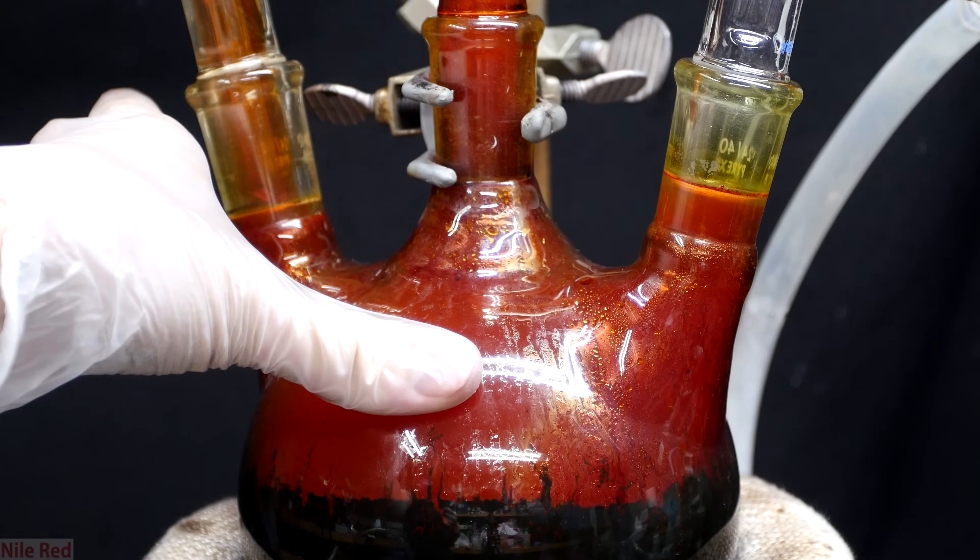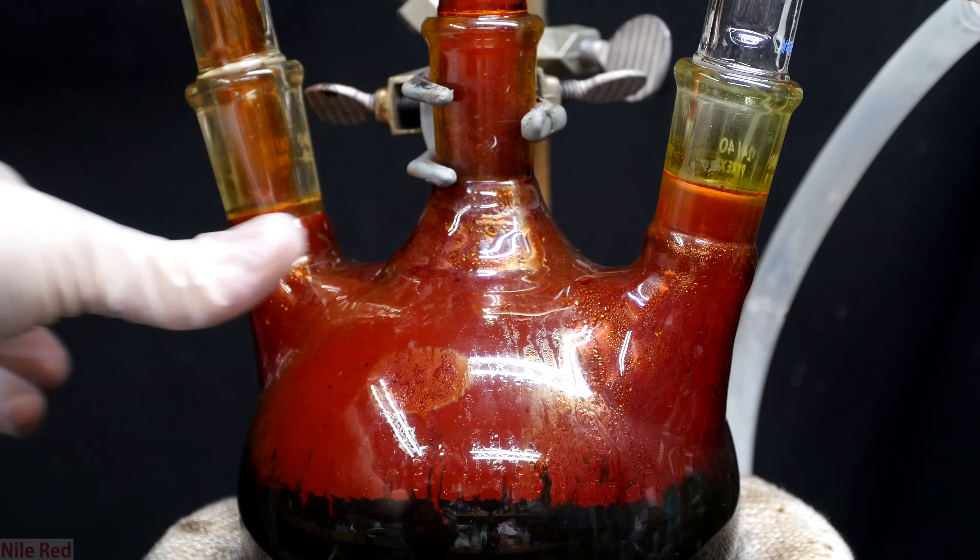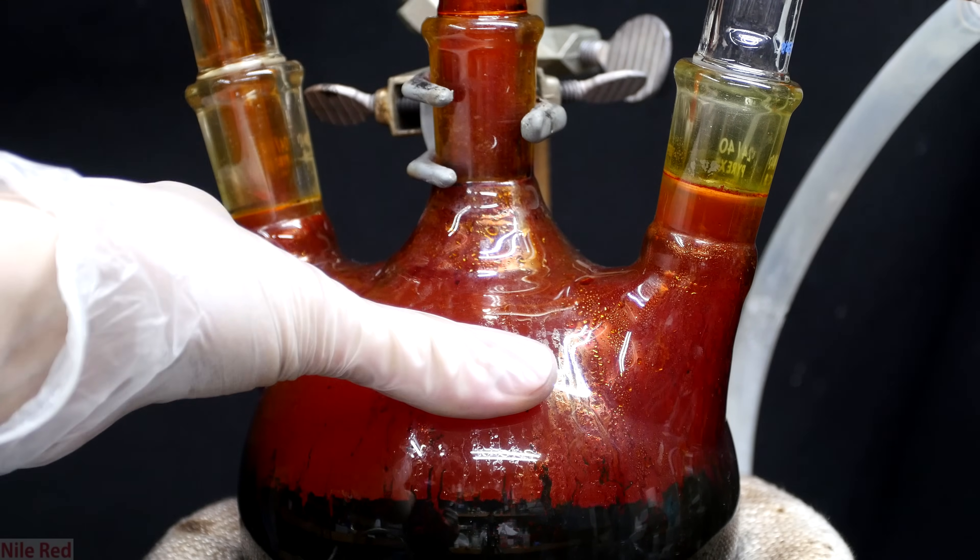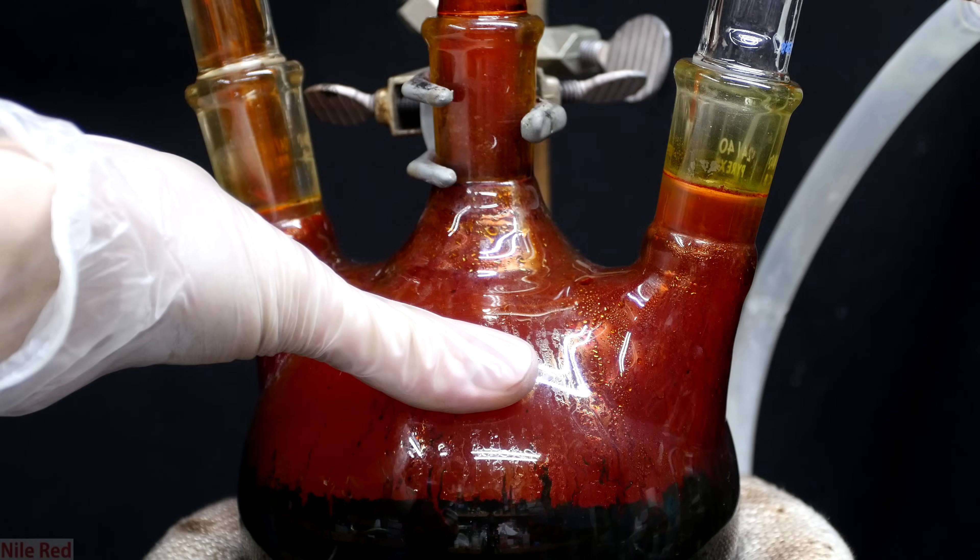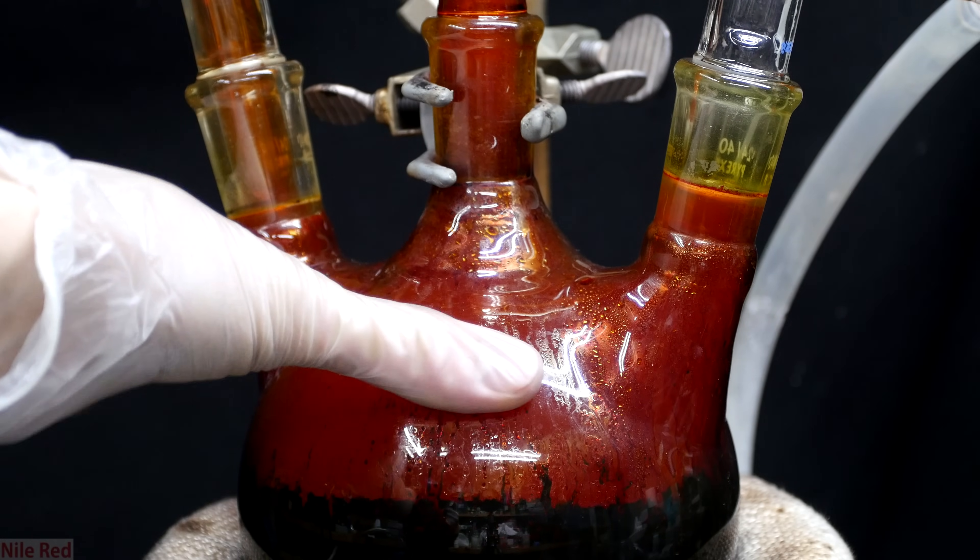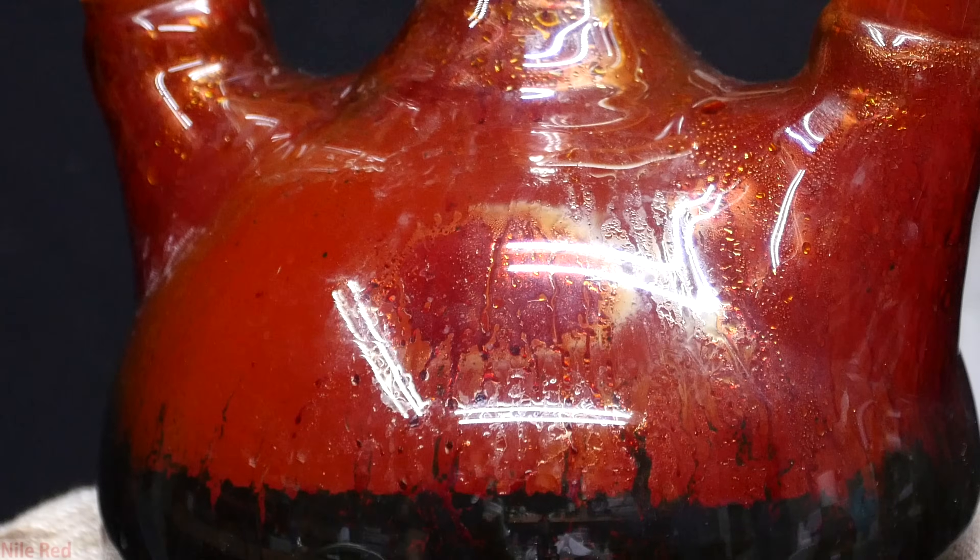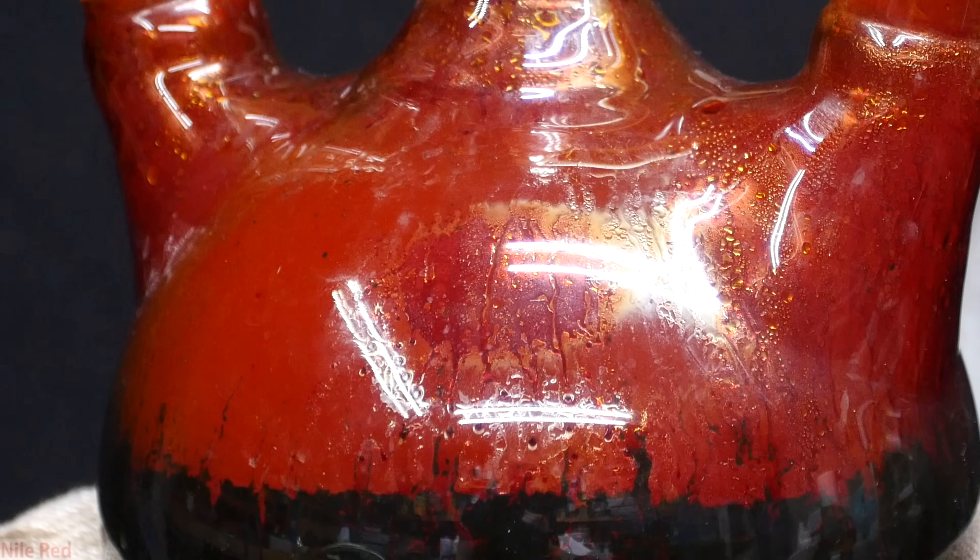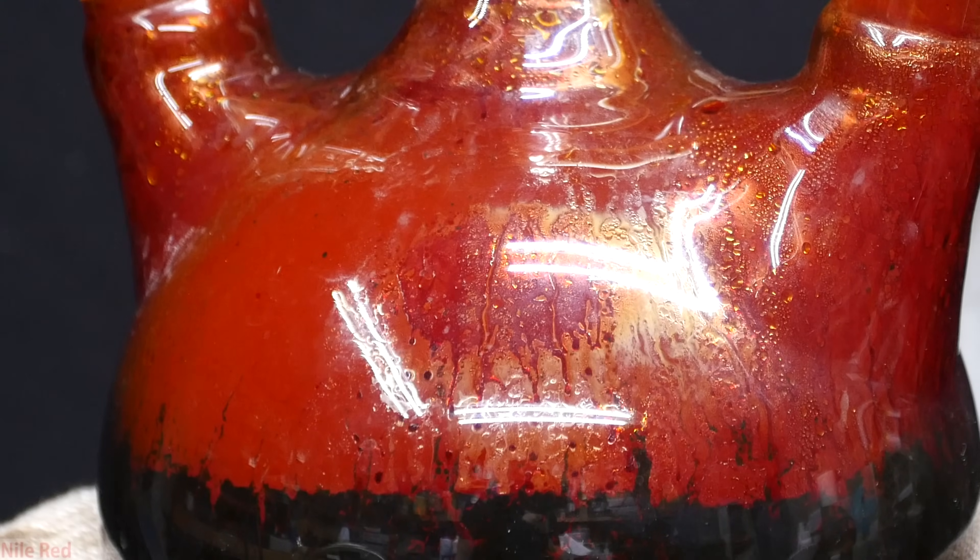Bromine has a boiling point of 58.8°C, which means that it's not too hot to touch. When I put my thumb against the glass, it actually cools it down enough that bromine starts to condense. I thought it was cool that even after I take my finger away, you can see where my thumb was and it's still condensing bromine.